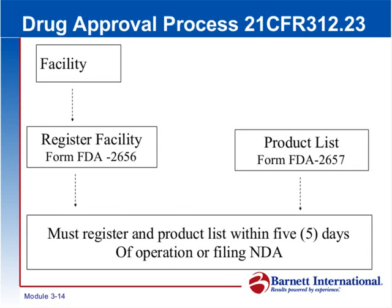Notice the term 'facility' — if you have a facility, you must register it on the 2656 form, which you can find on the FDA website. You must register and list your products within five days of operation or filing the NDA. For example, if we're a brand new company with no products on the US marketplace and we've just filed the NDA for our first product, within five days of filing we must register our manufacturing facility.